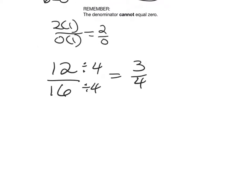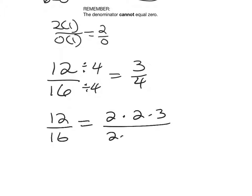Our fractions today aren't going to be this easy — our fractions are going to be polynomials, and we're going to have to factor those polynomials. With 12 and 16, we could factor into prime numbers: 12 is 2 × 2 × 3, and 16 is 2 × 2 × 2 × 2. Then you cancel common factors and get 3 over 4. We have to do this when they're polynomials.